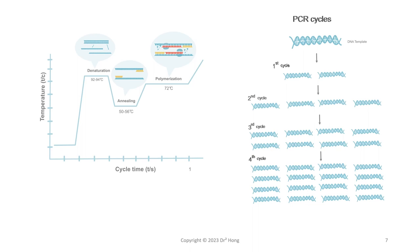Each cycle doubles the amount of DNA, so the DNA replication process in the thermocycler grows at an exponential rate. The figure on the right shows that after four cycles of reaction, it ends up with 16 copies of the original DNA template.